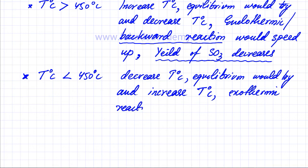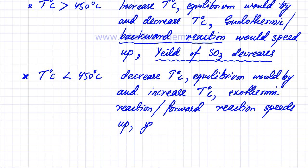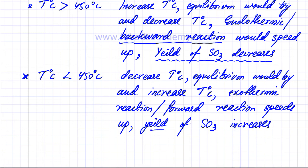The exothermic reaction, which in our case is the forward reaction, speeds up — and I'm using that term in relative terms, meaning it becomes faster compared to the backward reaction. So the forward reaction speeds up, equilibrium shifts to the right, more SO3 is produced, and the yield of SO3 increases — which is definitely a good thing.